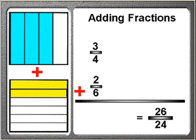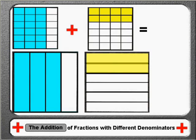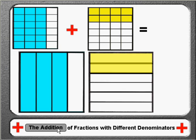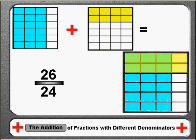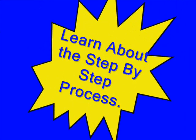Even though this pencil and paper addition problem was done without having to actually use the semi-concrete manipulatives, these virtual learning tools did help you to be able to visualize that the fractions three-fourths and two-sixths can both be converted into other fractions which share the common denominator of twenty-four. The important thing to learn about in this lesson is the process on how to convert any two fractions so that they will both share a common denominator, which will then allow their numerators to be able to be added.